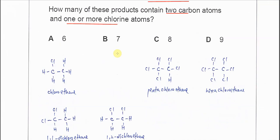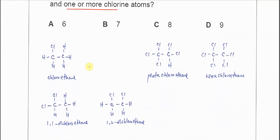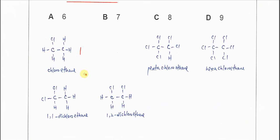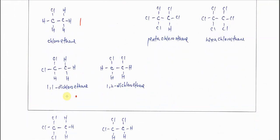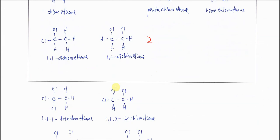First we start with the mono-substituted: chloroethane. Then di-substituted, so we have 1,1-dichloroethane and 1,2-dichloroethane. Here we already have two. Then tri-substituted, which has three chlorine atoms inside the molecule.